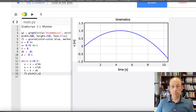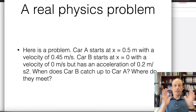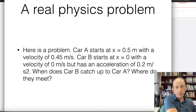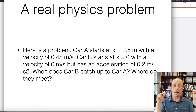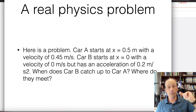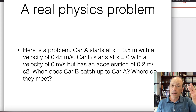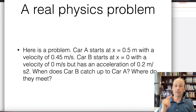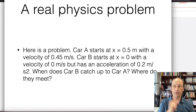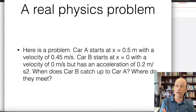We did that. Now here's a great problem — I love this problem. We're going to solve it from scratch, even though I give you some starter code. And I'm going to use a graph to solve it. Car A starts at x equals 0.5 meters with a velocity of 0.45 meters per second. Car B starts at x equals 0 with a velocity of 0 meters per second, but it has an acceleration of 0.2 meters per second squared. When and where does car B catch up — where do they meet?